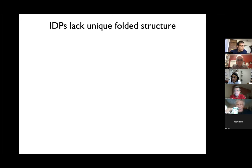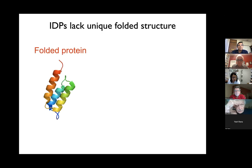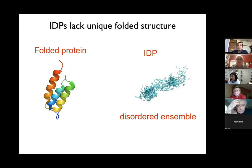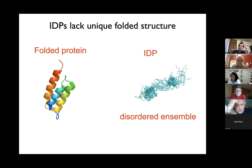Let me get to the business of IDPs — intrinsically disordered proteins. A very brief background: we all know what folded proteins are, where you have a unique folded structure. For IDPs you do not have a unique folded structure; what you have is a disordered state, an ensemble of these states, constantly dancing around and shuttling between all these disordered conformations. And that basically screams Boltzmann law — this is where physicists have something to contribute.